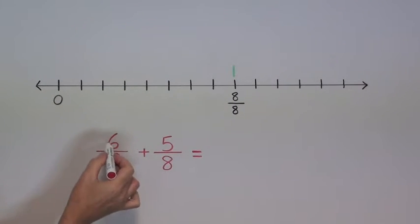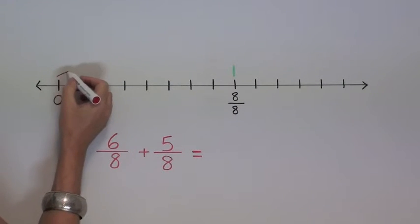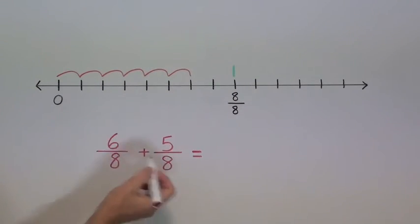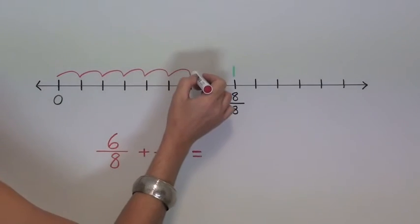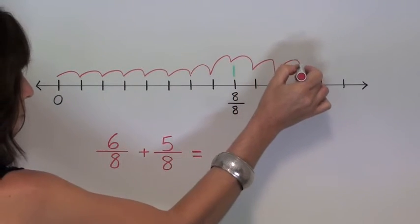Now to add this up, I start with jumping to 6 eighths: 1, 2, 3, 4, 5, 6. Now I need to add on 5 more: 1, 2, 3, 4, 5.